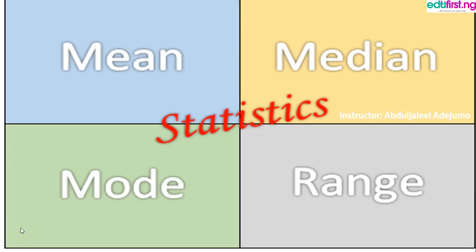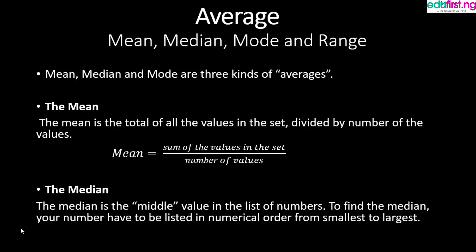Hello, good day. I am Abdul Jalil Adejuma, your instructor for statistics. Today we are going to look at average, and under average we have mean, median, mode, and we will also discuss range. Mean, median, and mode are the three kinds of averages.